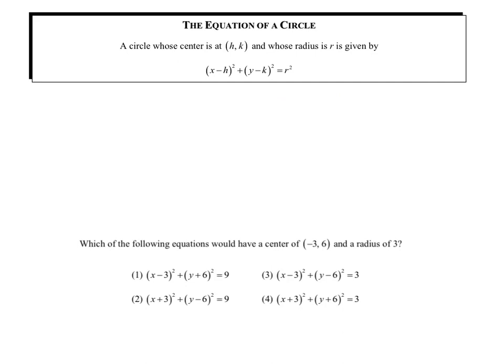Now some tricks of the trade. Remember, the center is the h and k value, and it's always the opposite. So if I said x minus 4 squared plus y plus 2 squared, my center would be positive 4, negative 2.